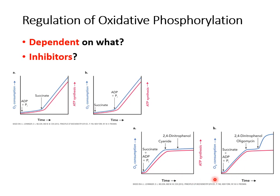Two important inhibitors: First, cyanide — circle and highlight this. Cyanide blocks the electron transport system by irreversibly binding to the iron atom in the heme of cytochrome C oxidase. Once cyanide is present, ATP synthesis flat-lines because the electron transport system has been irreversibly blocked.